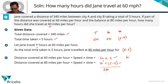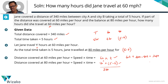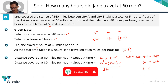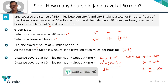60t plus 80 times (5 minus t) equals 340. That gives 60t plus 400 minus 80t equals 340. Combining terms: 60t minus 80t is minus 20t. Taking it to the right-hand side makes it plus 20t, and 400 minus 340 equals 60. So 20t equals 60, and t equals 60 divided by 20, which is 3 hours. She travelled 3 hours at 60 miles per hour and the balance 2 hours at 80 miles per hour.